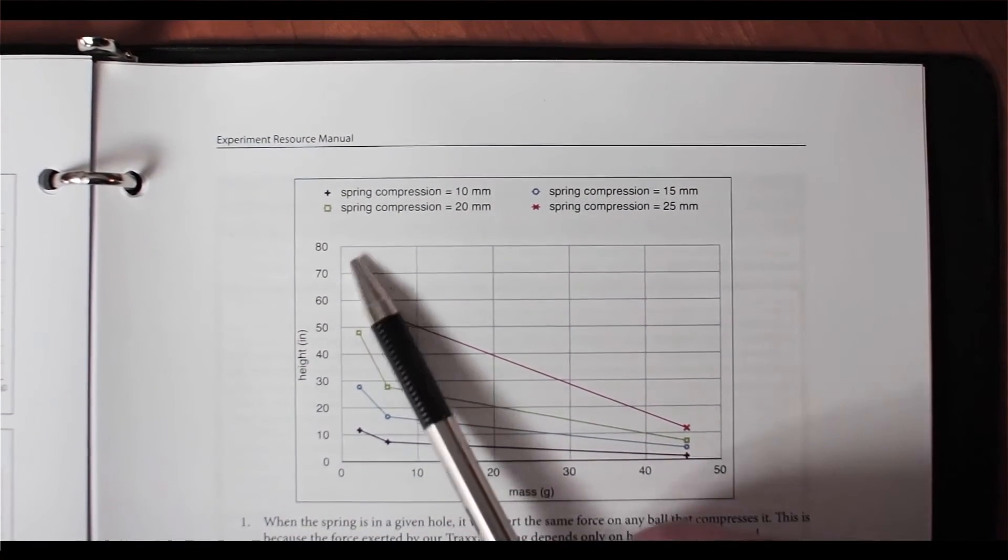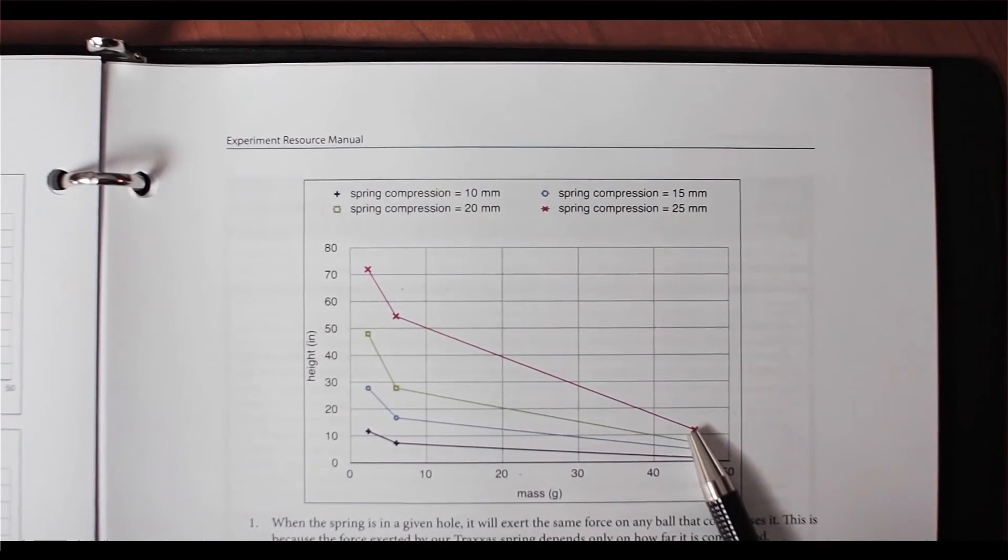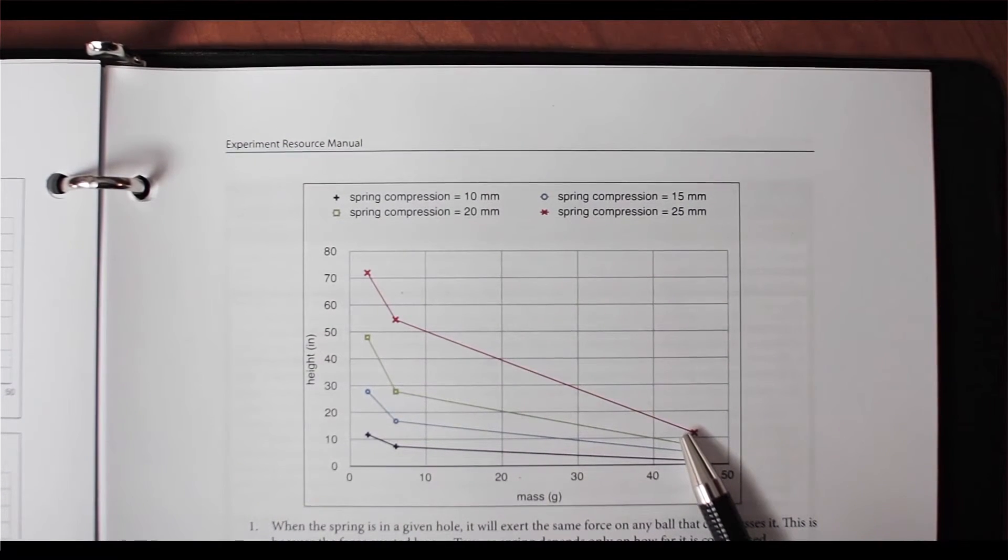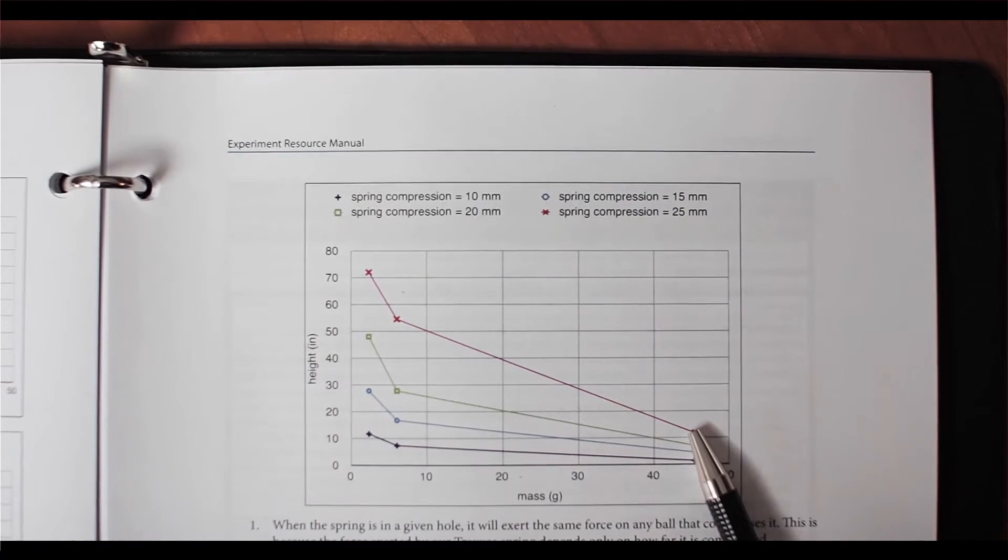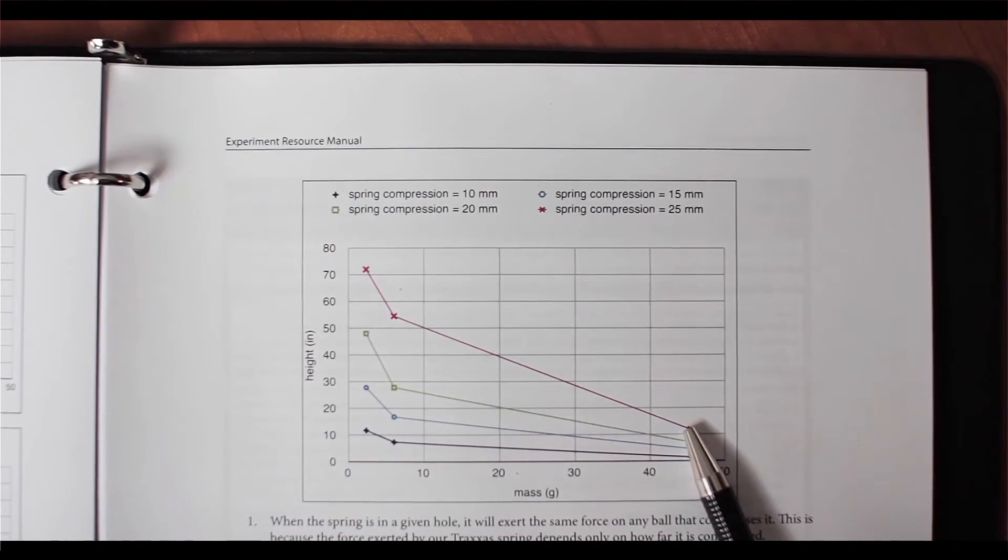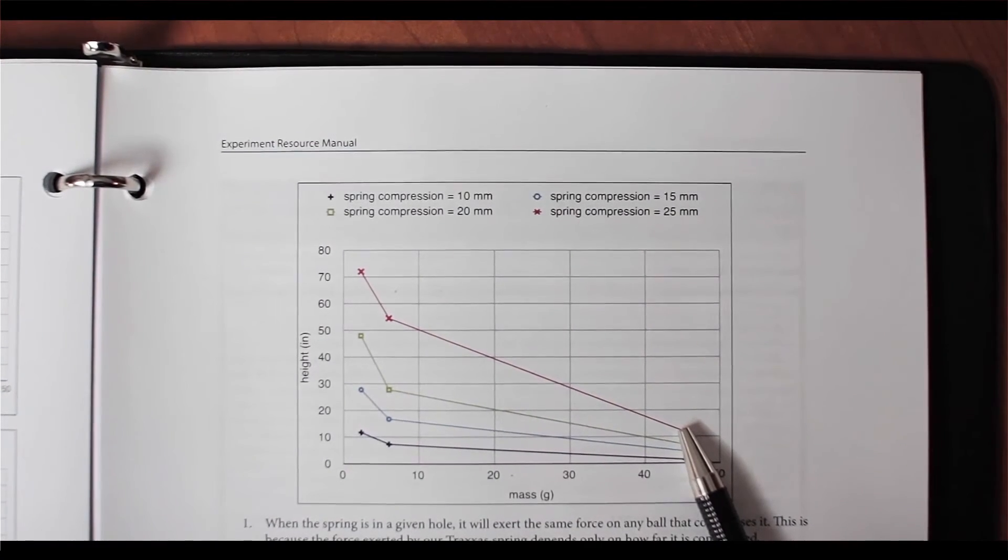On the red curve, that's the highest curve. That's when the balls went the highest. That would correspond to the spring that was the longest launching spring.